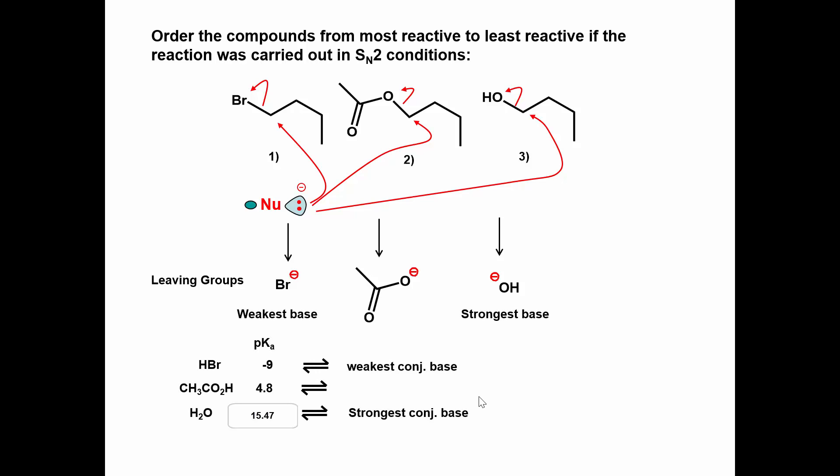The best leaving group will be the weakest base. If you cannot remember their basicities, think about them as acids. HBr is a very strong acid and has a very weak conjugate base. Acetic acid is a weak acid and has a weak conjugate base.